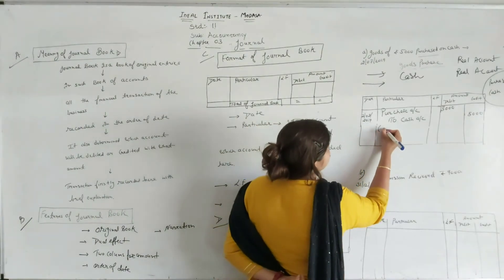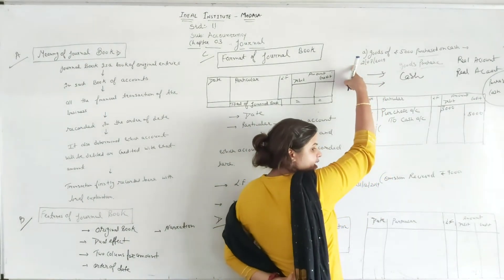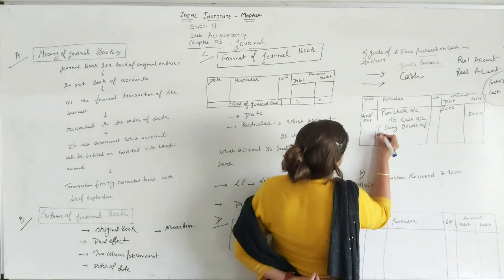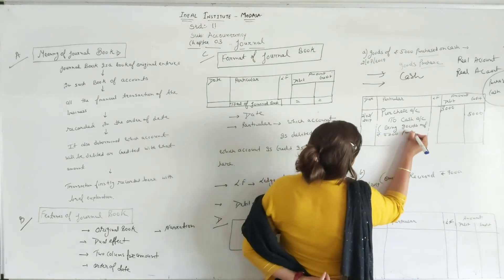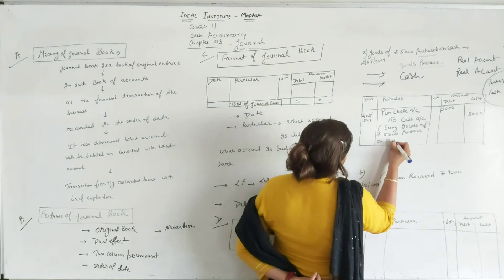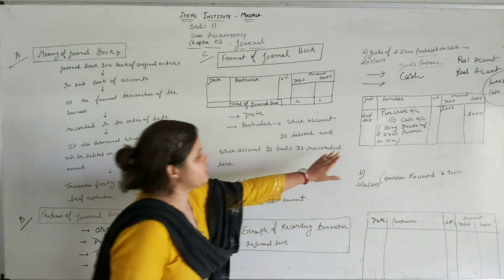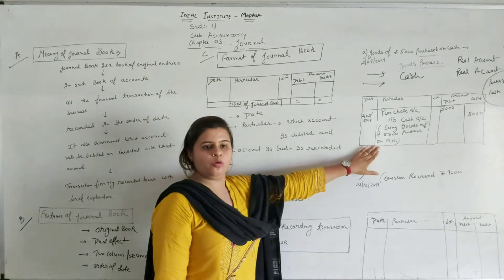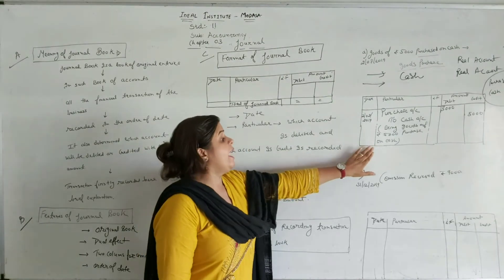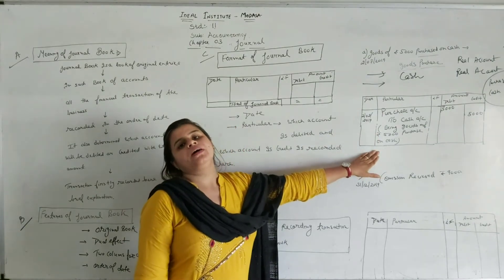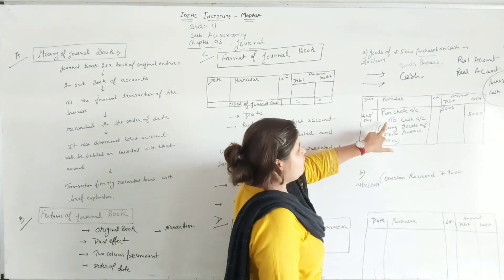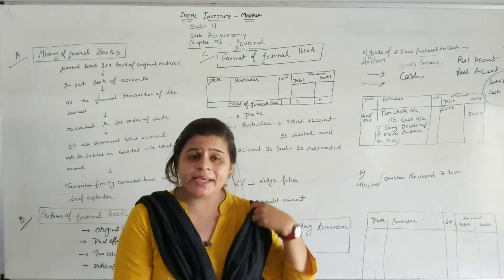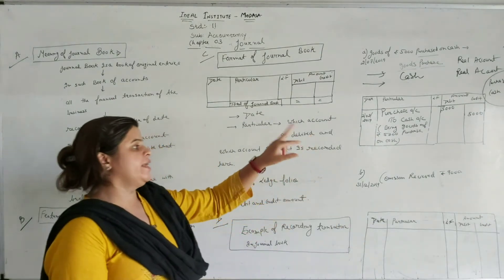Now you are able to make, and time to practice how to prepare the journal book. I mentioned date, I mentioned particular, LF should be blank, amount is done. Now next thing is narration, how to write narration. Narration means the transaction you have identified here, write it here: being goods of rupees 5000 purchased on cash. Whatever transaction happened, just write it below in this manner. Now you understood why we call the journal book the original book, first book where we recorded the transaction firstly, and it shows the brief explanation of the transaction. We used dual effect, identified debit credit, identified accounts' nature, applied rule, systematically recorded it, and mentioned the narration. This is how if you want to practice, you will have to make some efforts to practice such kind of transactions.